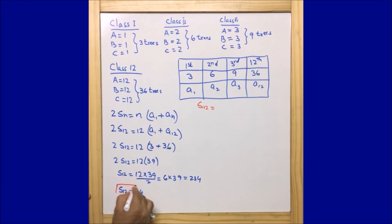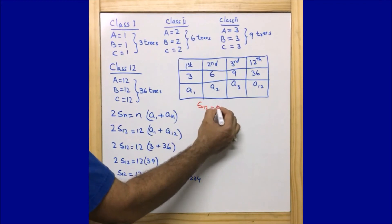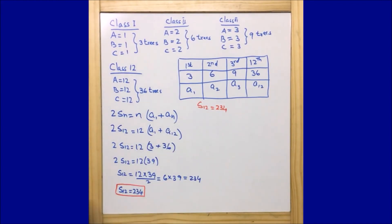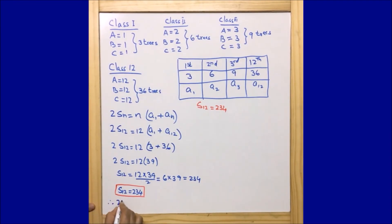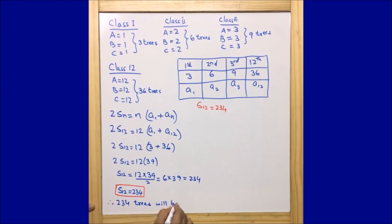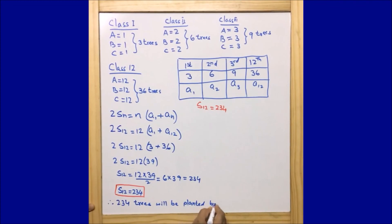We can easily say that the sum total of trees that the school is going to plant is 234. Therefore, 234 trees will be planted by the students.